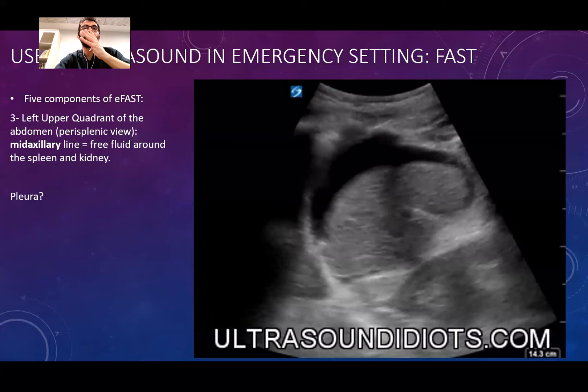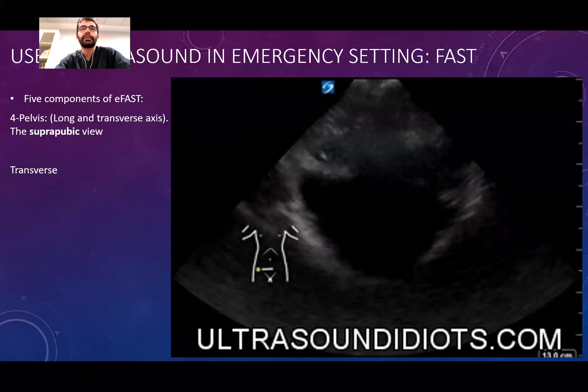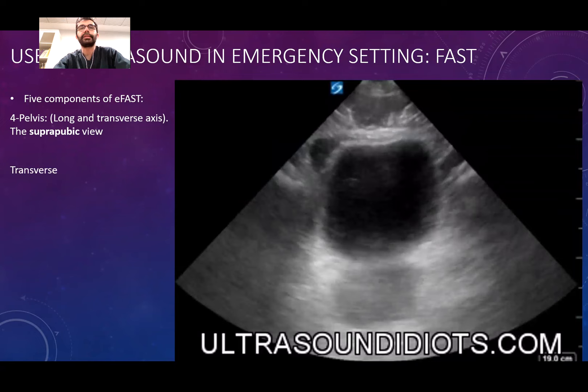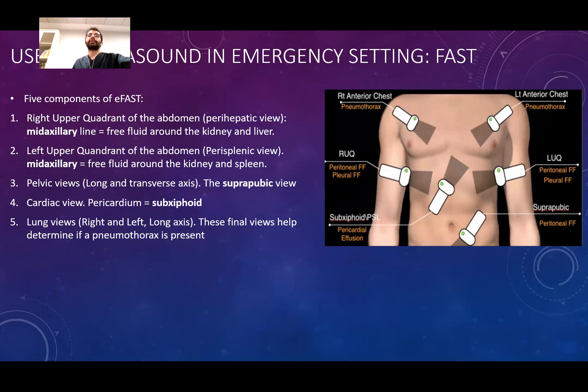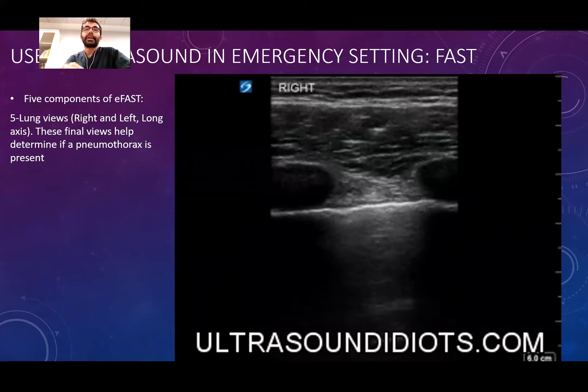In summary, we are looking at four different areas: around the heart, around the liver, around the spleen, and around the pelvis — trying to see bleeding. This was a normal scan for the bladder, this was abnormal, and this was an abnormal transverse view. In EFAST we check five areas: around the liver, spleen, pelvis, cardiac, and we look for pneumothorax.